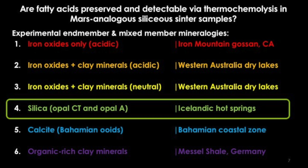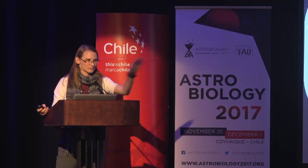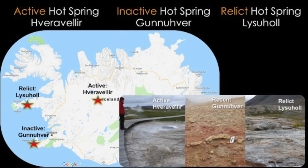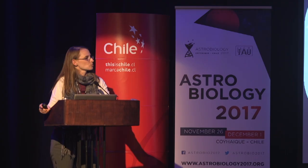Here are the three sites that we've worked in — and here's where my Icelandic is going to be butchered. We worked in an active hot spring, Hveragerði, and in an active hot spring on the southwestern coast called Gunnuhver. And then we worked at a relic hot spring, also on the west coast, called Lysulhóll.